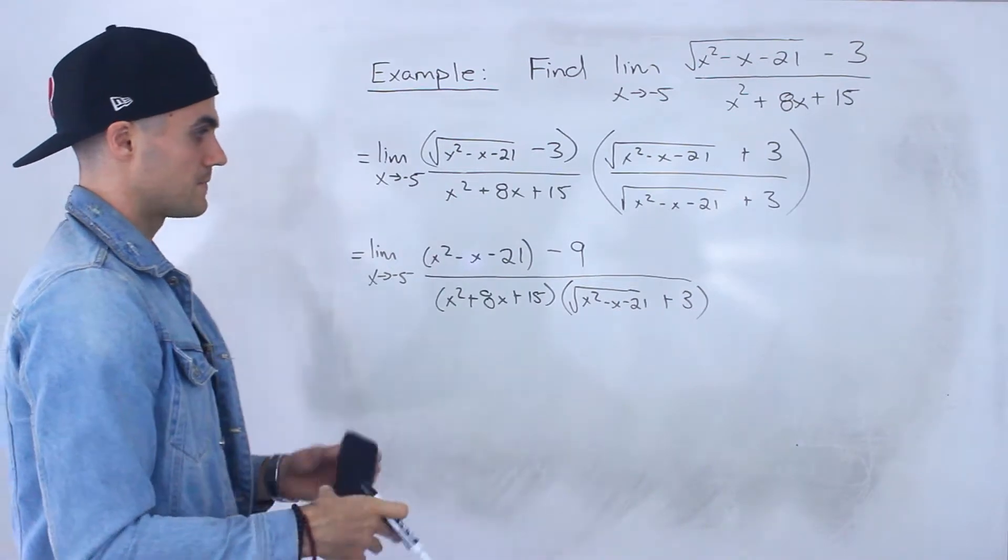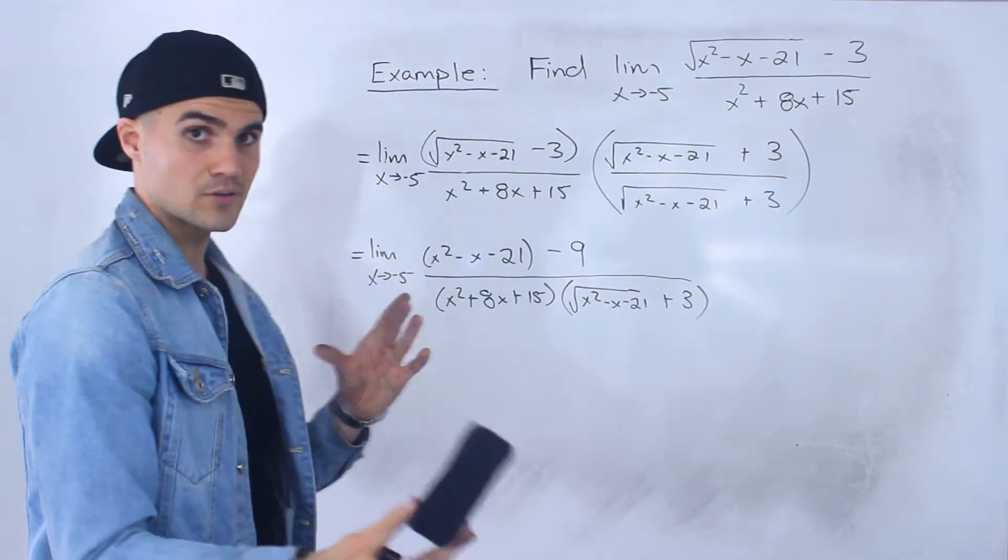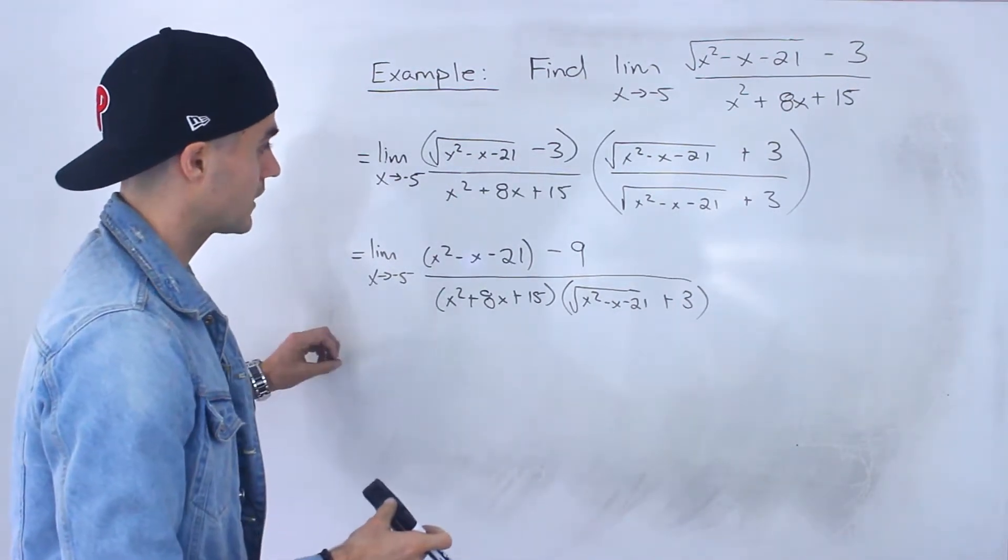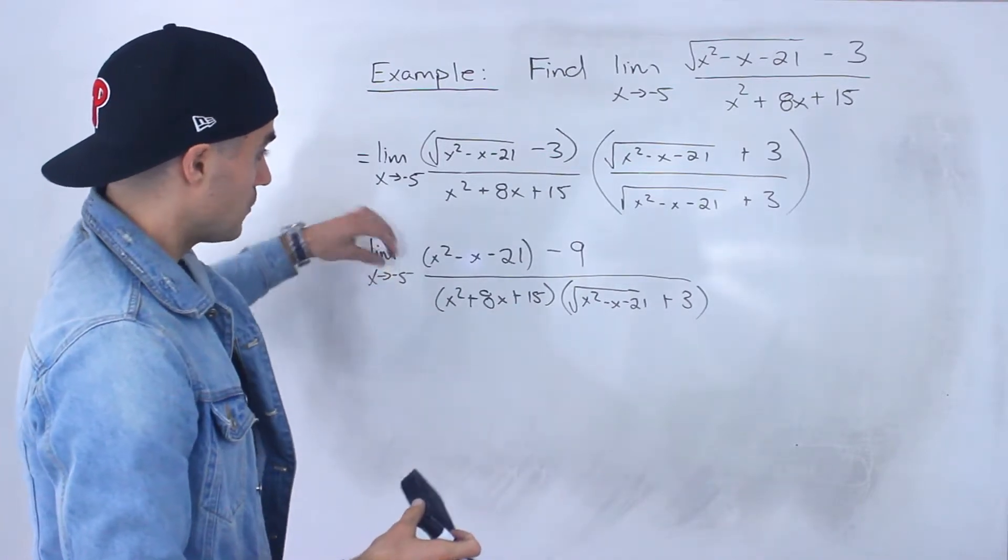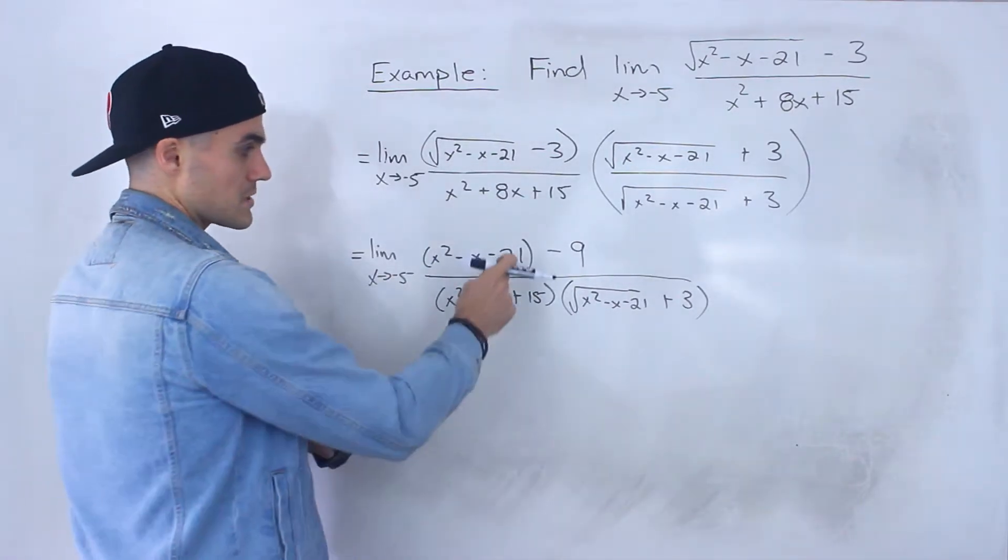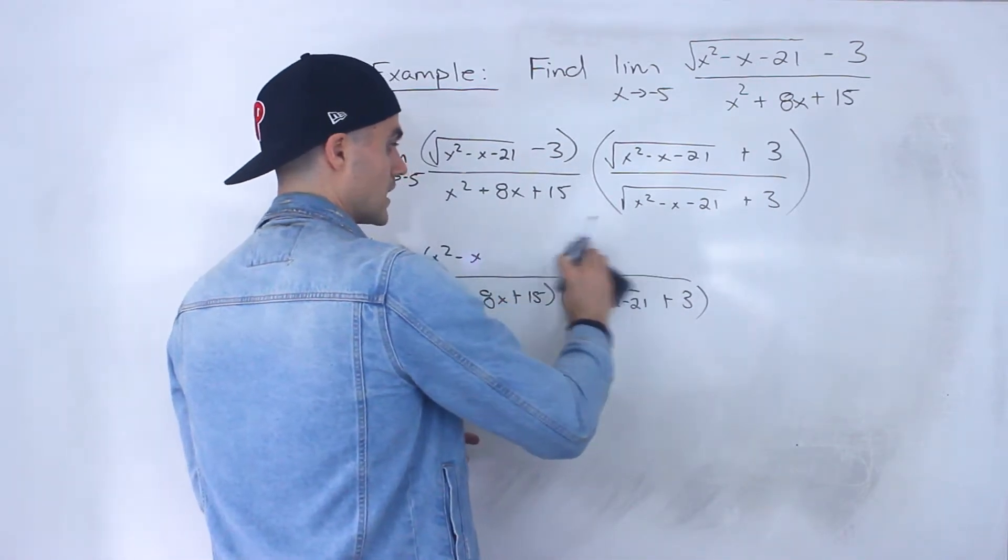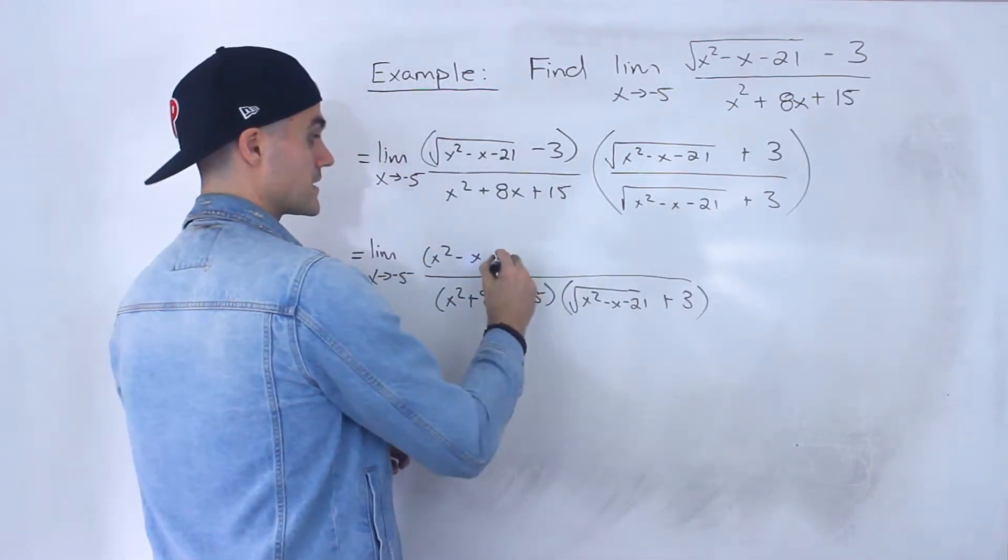And so now what's going to happen is we rationalized everything, still can't do a direct substitution. But what we can do is, first the numerator, notice the minus 21 minus 9 that would end up giving us minus 30.